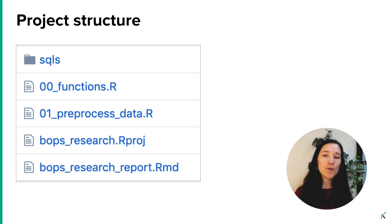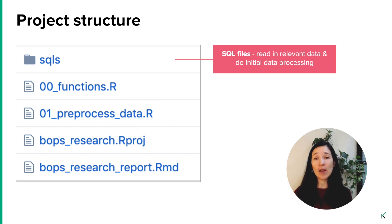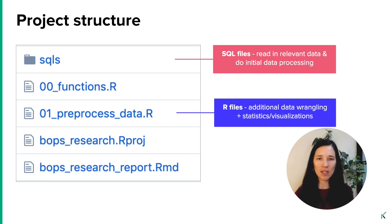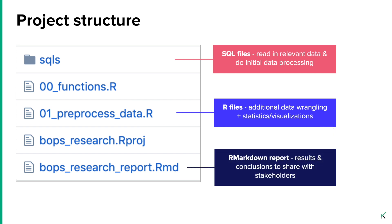Speaking of project structure, if you were to take a walk through the GitHub repositories at Riskified, you would often encounter a folder structure like this: SQL files where you're reading in relevant data, doing some initial data processing, getting that initial sample population ready for analysis. Then you have your R files where you do all the complex steps — the stats, visualizations, et cetera. Sometimes you're bringing extra information from the database in between with smaller queries. And finally you have an R Markdown report where you share your results and conclusions with stakeholders — this is where both of those pieces really come together into one final product.